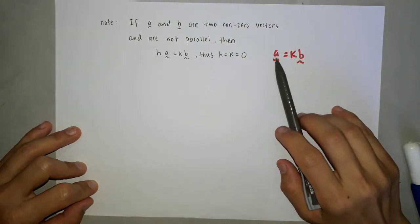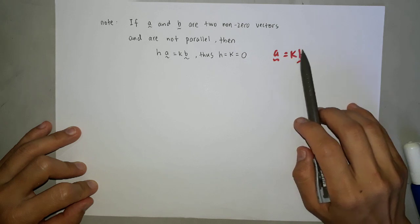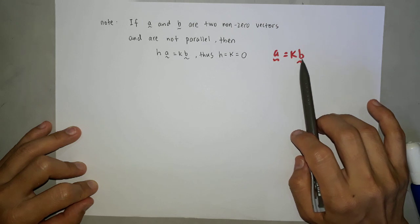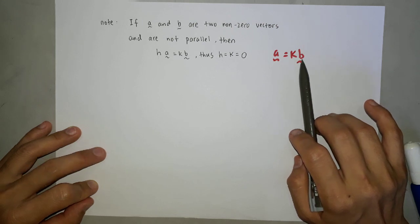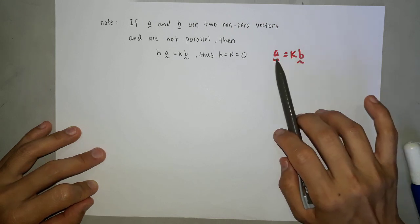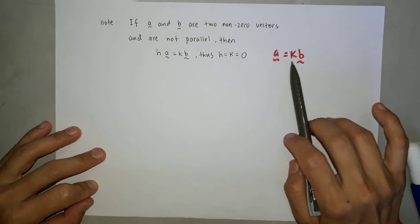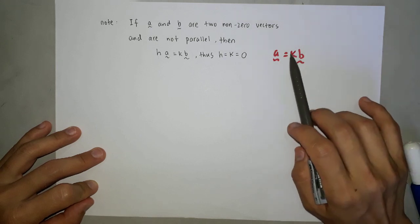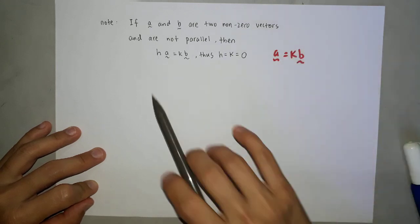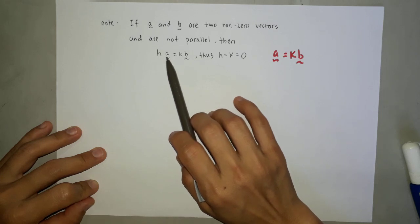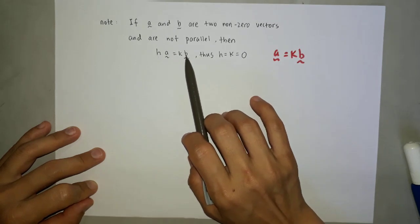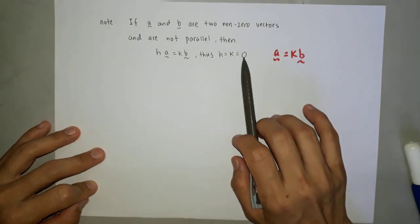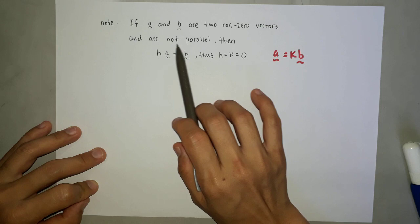Remember when we write vector A equals to K vector B where K is a constant, that means vector A and vector B are parallel. If these two vectors are not parallel, only if the constant is zero. So in this case, HA equals to KB. Only if H and K equals to zero, the vectors are not parallel.